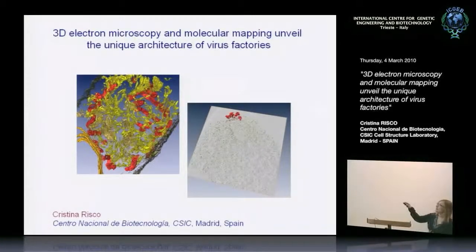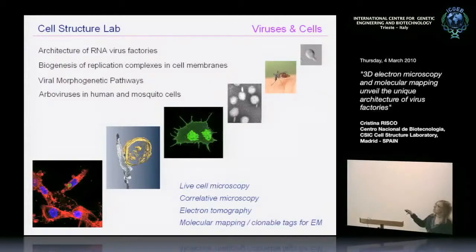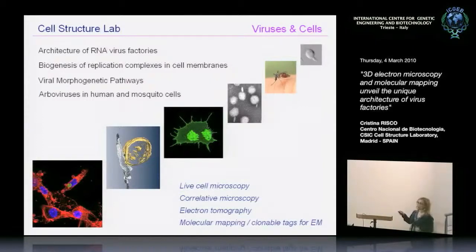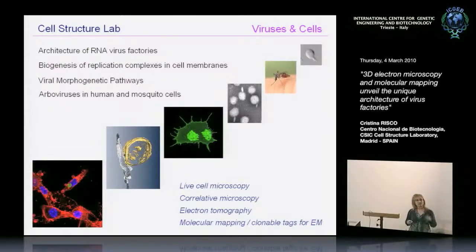The Cell Structure Lab is interested in the interactions of viruses and cells, as Oscar described. We are studying a number of biological problems related to these, such as the architecture of RNA virus factories, the biogenesis of replication complexes in cell membranes for RNA viruses, viral morphogenetic pathways, and more recently we incorporated a project trying to understand why arboviruses do not kill cells from vectors like mosquitoes or arthropods, but they rapidly kill human cells.